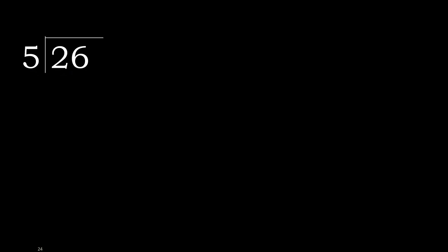26 divided by 5. 2 is less, therefore next: 6. 26 — 26 is not less, therefore with 26. 5 multiplied by which number is nearest to 26?